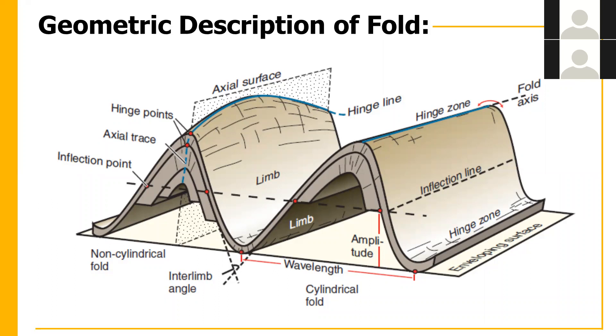To summarize the geometric description: hinge points, axial trace, inflection point, limb, axial surface, hinge zone, amplitude, wavelength, and interlimb angle — that is all for geometric description.